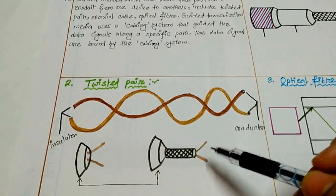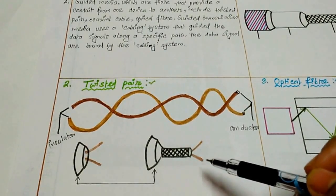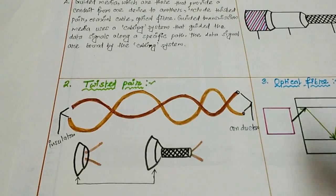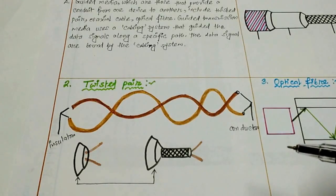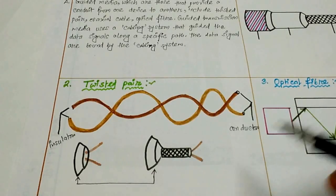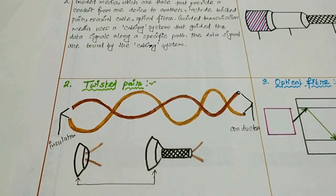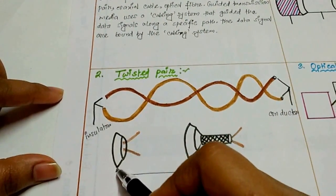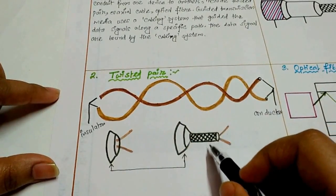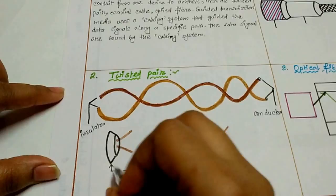One of the wires is used to carry signals to the receiver and the other is used as a ground reference. The receiver refers to the difference of the two. RJ45 is used in twisted pair cable. Interference or noise may affect both wires and create unwanted signals. By twisting the pairs, a balance is maintained on both sides. It is a picture of unshielded twisted pair and it is the picture of shielded twisted pair. These are the plastic covers.